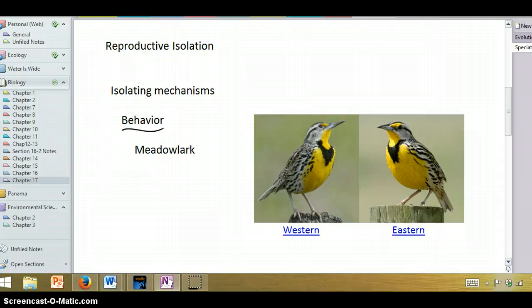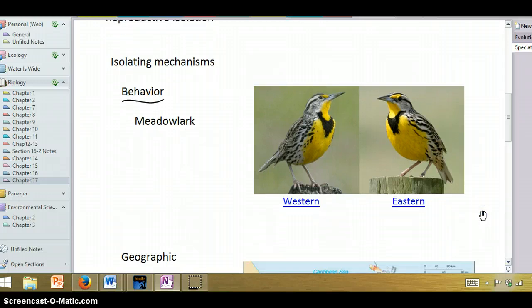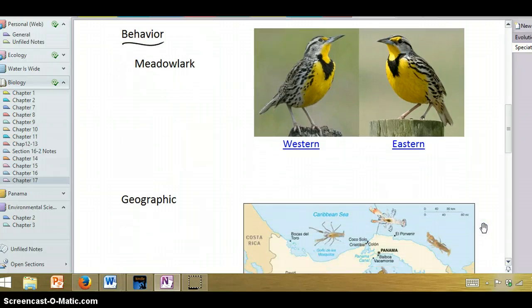In class you can click on these links and it'll take you to a site where you can hear the songs they sing, and the songs are quite different. An eastern meadowlark doesn't really respond to or recognize the song of a western meadowlark and vice versa. So they've essentially evolved different behaviors which keeps them separate from each other.